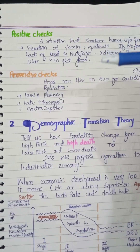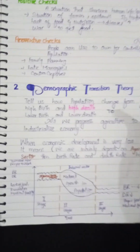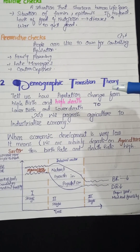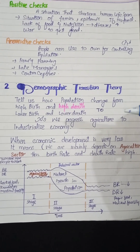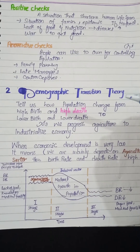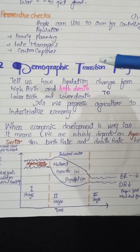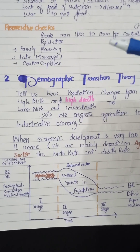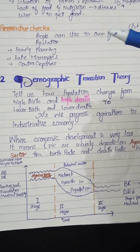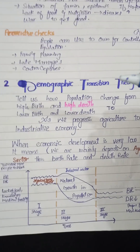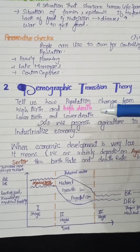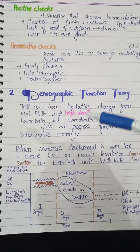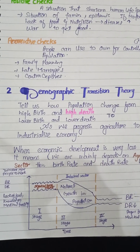Now we are talking about the demographic transition theory. This theory describes how population changes from high birth rate and high death rate to low birth rate and low death rate as we progress from an agricultural economy to an industrial economy. It explains the difference between birth rate and death rate across these stages.